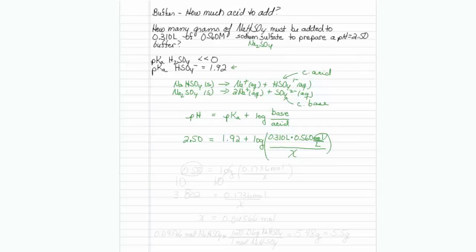I've got to bring this 1.92 over, and this is going to be 0.58 equals the log, and I'll multiply out these other ones, and I will get 0.1736 moles on top and x on the bottom.